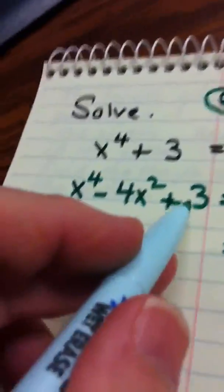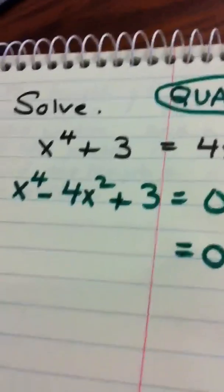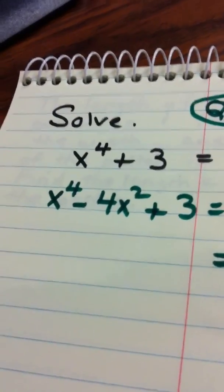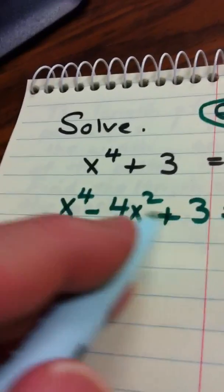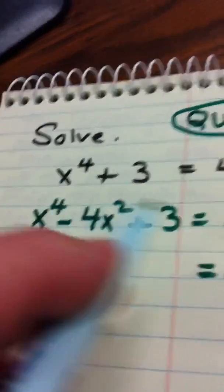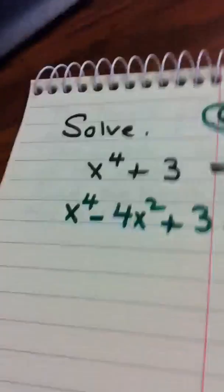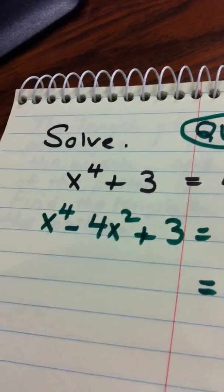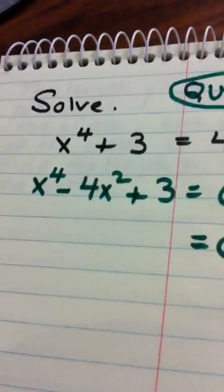And remember, people, if this does not factor, a way that you could solve this would be to go to your calculator, type this function in right here, and find its zeros. And then you could at least approximate the answers, if not get exact.